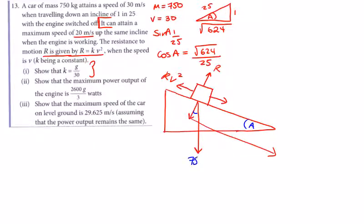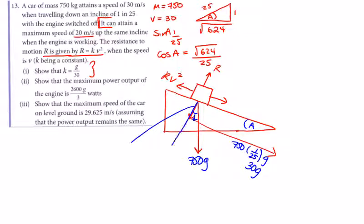The weight component along the slope is 750g times sine a, which is 750g times 1/25, giving 30g acting down the incline. The weight component perpendicular to the slope is 750g times cos a, which is 750g times root 624 over 25, giving 30 root 624 times g acting into the slope.